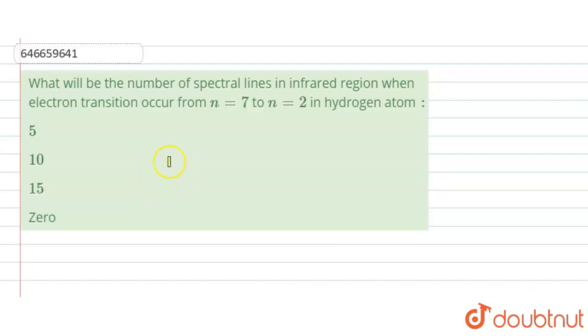So here the question is: What will be the number of spectral lines in the infrared region when the electron transition occurs from n equals 7 to n equals 2 in hydrogen atom?